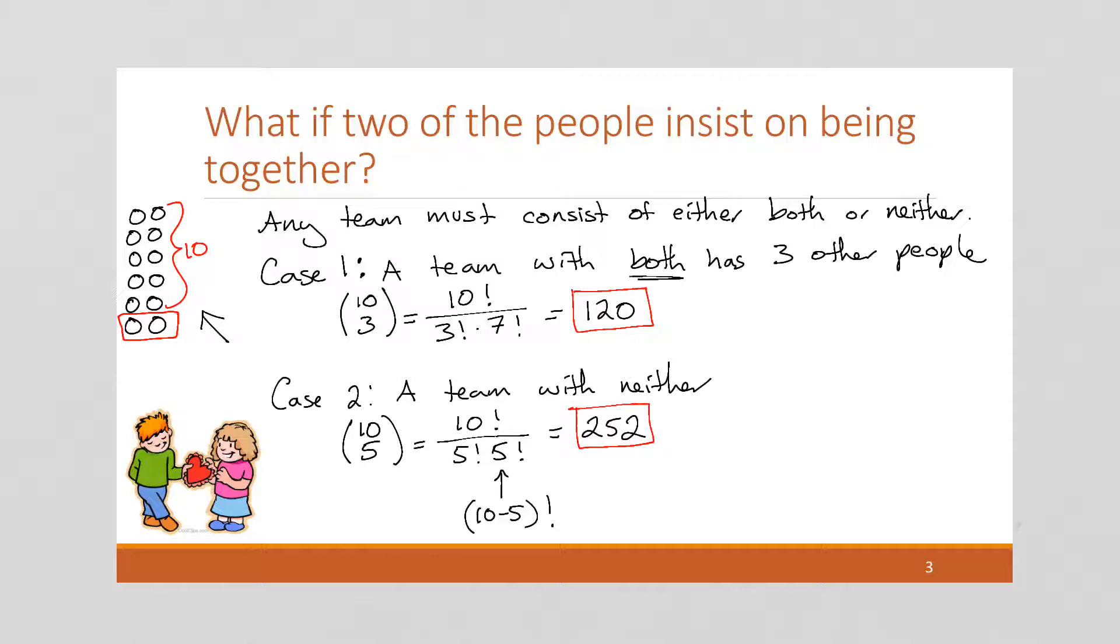So this is an either or situation, not an and. The team is going to either contain both of them, or it's going to contain neither. So the total number of ways of creating the group, we're going to add these together, and we're going to get that this is 372.